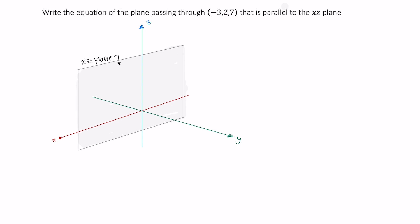We want it to pass through this point, negative 3, 2, 7. So on x, and again, you don't need to do this. I just want to make sure that those of you in my class watching this understand really everything that's happening.